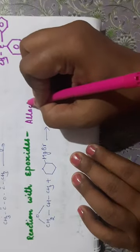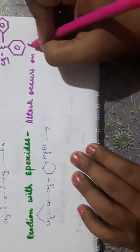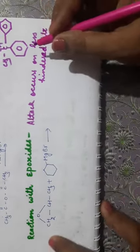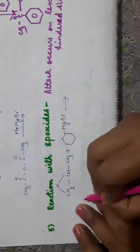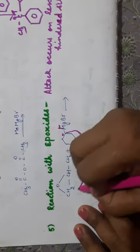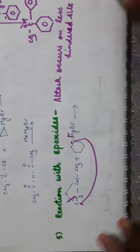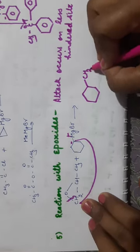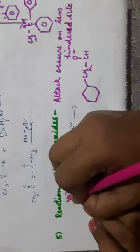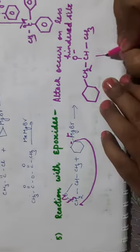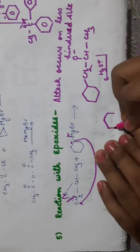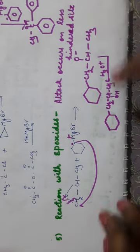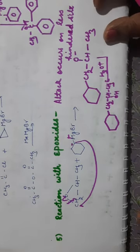Reaction with epoxides: the attack occurs on the less hindered side. In the example, there is a CH₃ group on one carbon of the epoxide and no substituent on the other. The carbanion attacks the less hindered carbon (the one without CH₃), the C–O bond breaks, and on hydrolysis the product is cyclohexyl–CH₂–CHOH–CH₃ — an alcohol. Remember: the attack always occurs at the less hindered carbon of the epoxide.